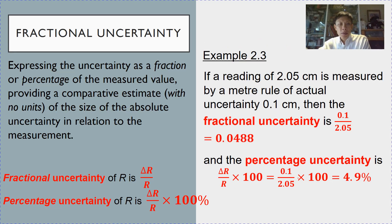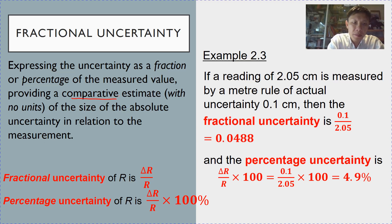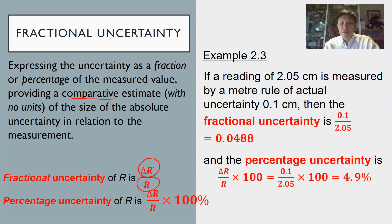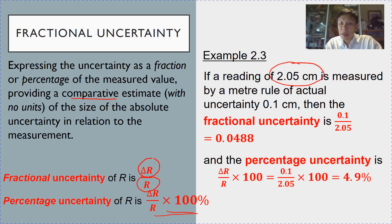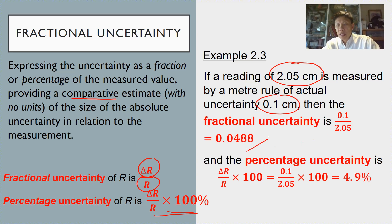Next we learn what fractional uncertainty is. Fractional uncertainty is useful for comparison: you take the uncertainty Δr and divide it by the reading r itself, expressing it as a fraction. We can also express it as a percentage, which is just the fraction with base 100. For example, if the reading is 2.05 cm and the uncertainty is 0.1 cm, the fractional uncertainty is 0.0488, which translates to 4.9 percent.